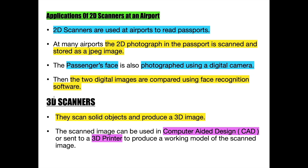Let us now go through the next input device, which is the 3D scanner. 3D scanners scan solid objects and produce a 3D image. This scanned 3D image can be converted into a 3D model with the use of computer-aided design and a 3D printer.